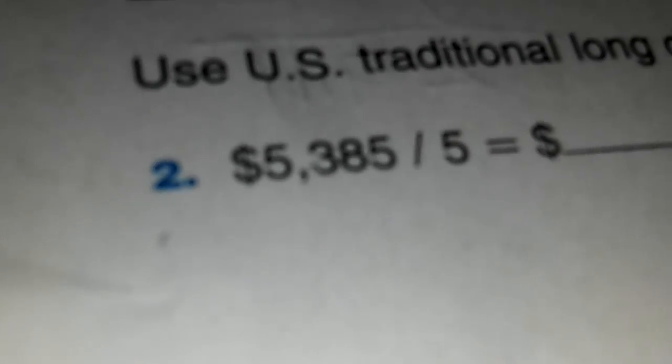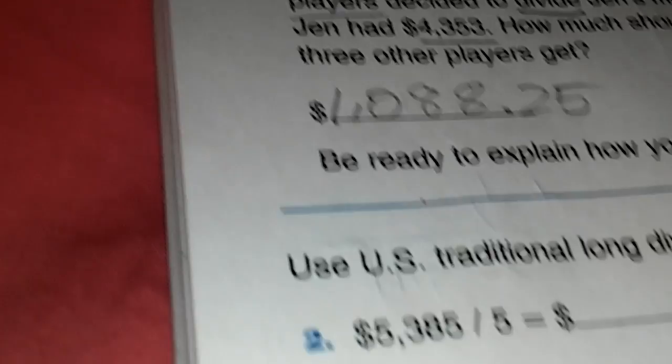all of these right here. It's talking about money. It says five thousand, well I think that's million for some reason, five million three hundred eighty-five, and then five. It has this thing right here, I have no idea what that is.